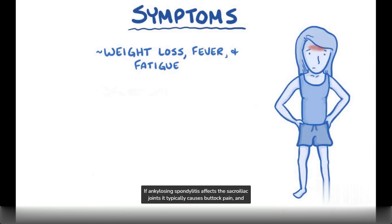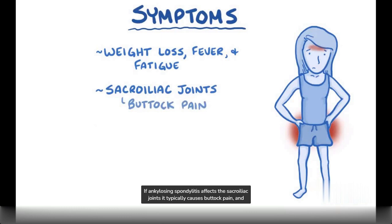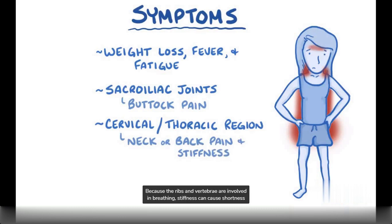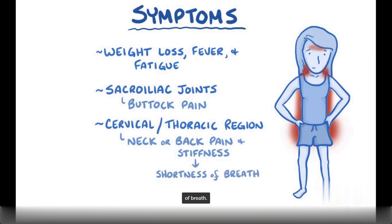If ankylosing spondylitis affects the sacroiliac joints, it typically causes buttock pain, and if it affects the cervical or thoracic region, it can cause neck or back pain and stiffness. Because the ribs and vertebrae are involved in breathing, stiffness can cause shortness of breath.